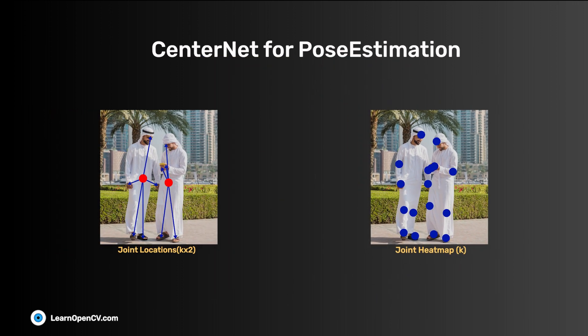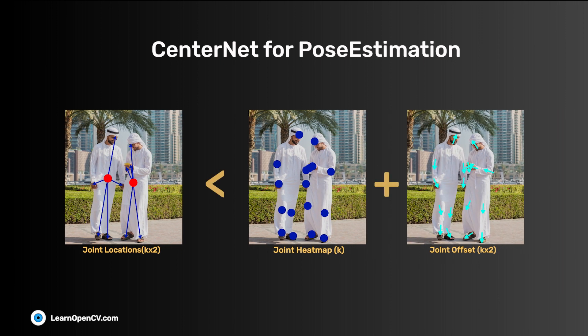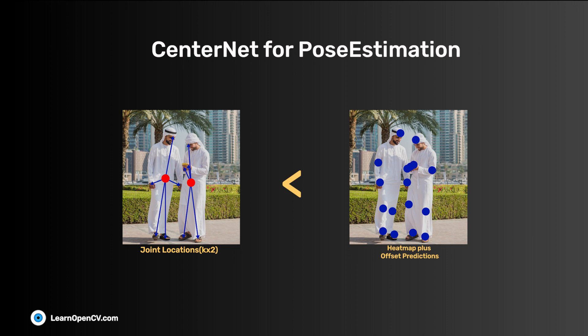Joint location prediction is crucial in solving the problem. It predicts the location of all the keypoints for the corresponding object center. However, it is less accurate than the heatmap plus offset prediction. Hence, joint location is used to map joint heatmap plus offset to its corresponding object center.